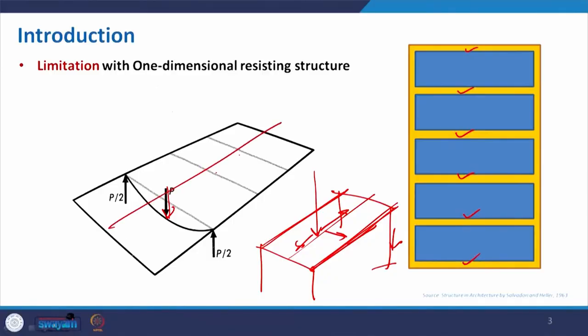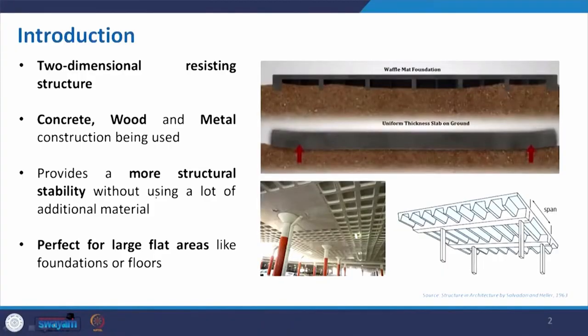In order to overcome that, we may add some members and make a grid form. When a load is applied, it will be distributed in a much better way. Coming back to the first slide — it is two-dimensional, not in one direction, but both directions have beams interacting with each other. Whenever there is a point load, it can be easily distributed.